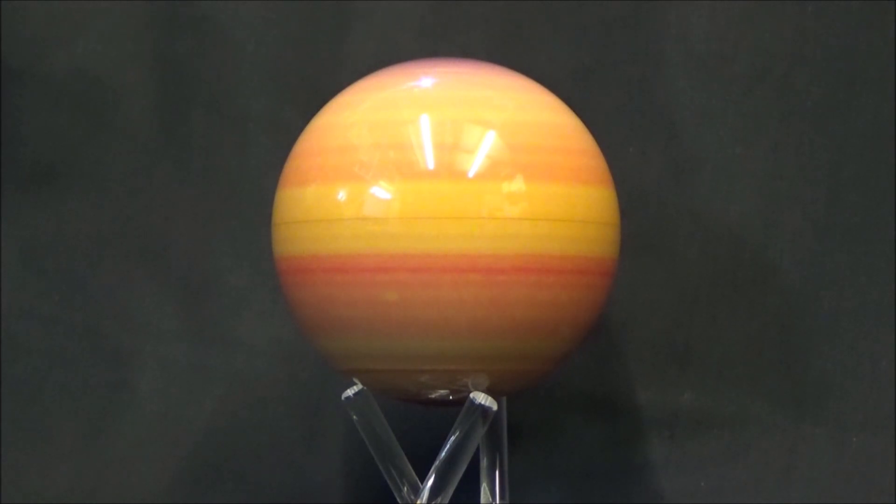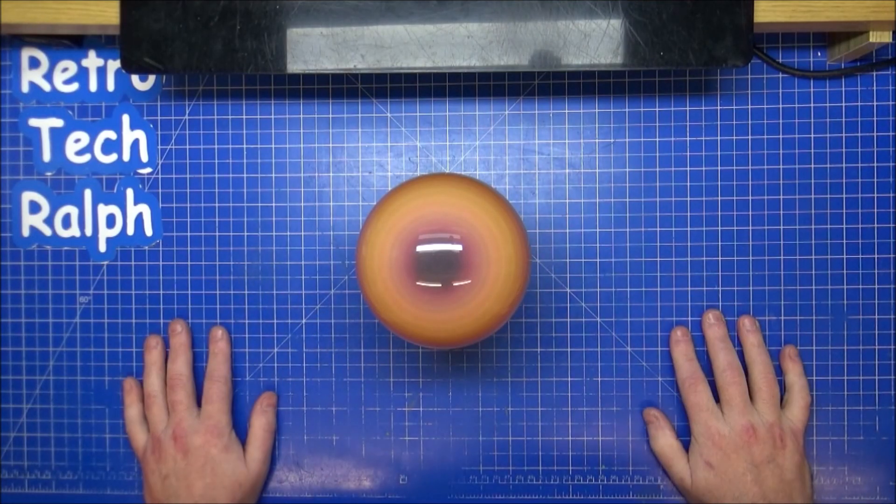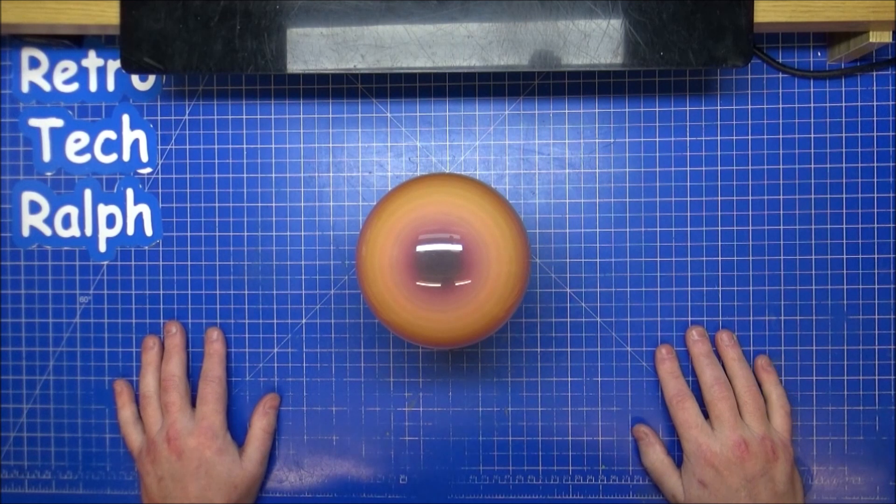So let me get this back onto the bench, and we'll have another last view of the MOVA globe Saturn, the 4.5 inch Saturn. And there you go. Back on its stand. Back on the bench. That's the MOVA globe Saturn. Hope you enjoyed that.